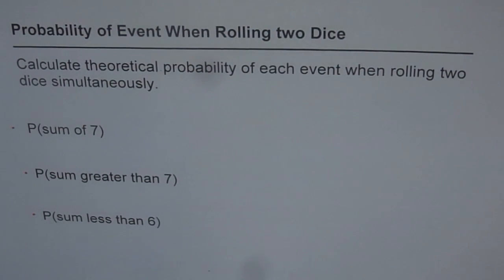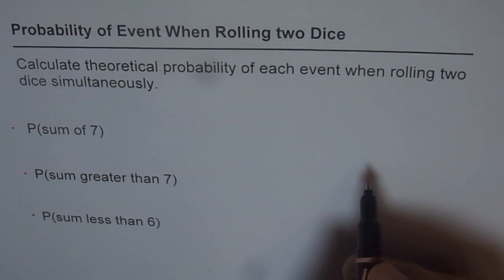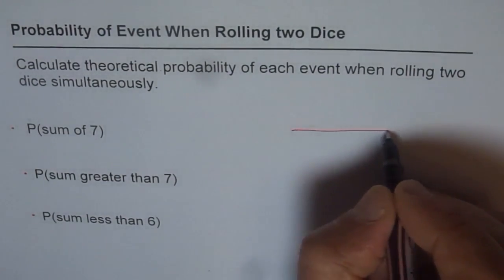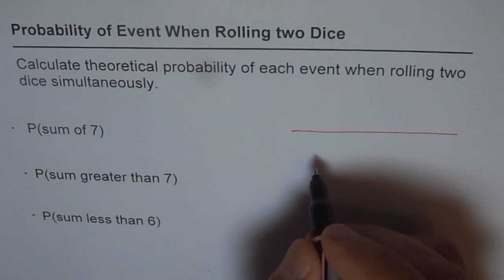So to do these problems, we take help of a matrix or a kind of a table. In this question, we are rolling two dice simultaneously. So let's make a table with six rows and six columns, since there are six outcomes for each dice.